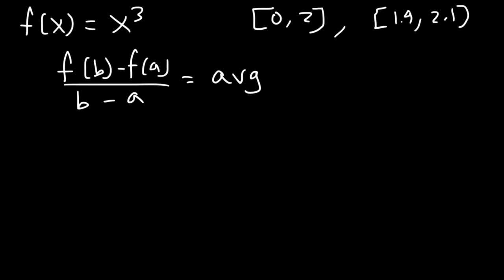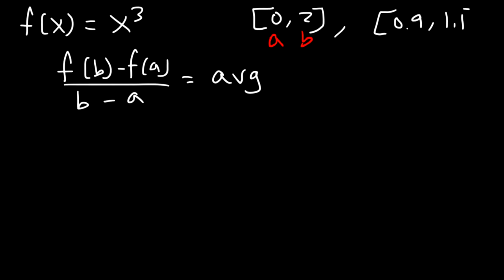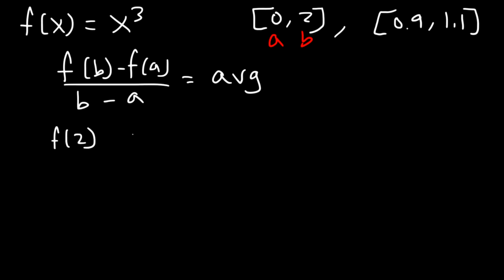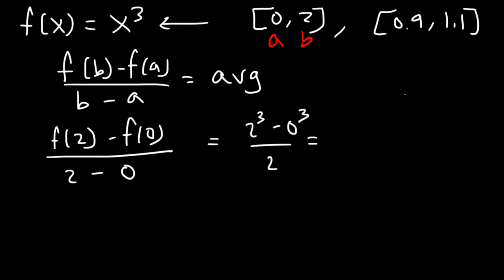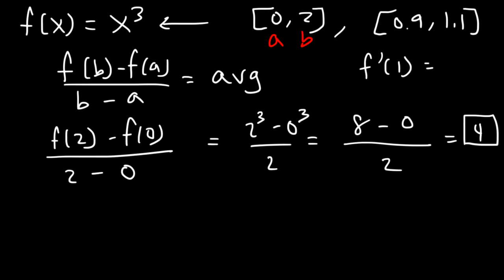Let's call this the average. So a is 0 and b is 2. We need to find f of 2 minus f of 0, divided by 2 minus 0. That's 2 to the 3rd power minus 0 to the 3rd power, divided by 2. 2 to the 3rd is 8, 0 to the 3rd is 0, and 8 divided by 2 is 4. So the average rate of change is 4, which is close to the instantaneous rate of change of 3 at x equals 1 — they're not too far apart.